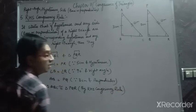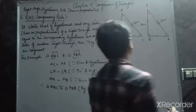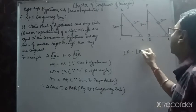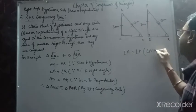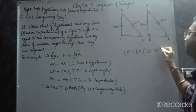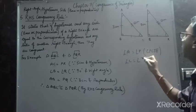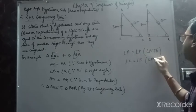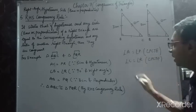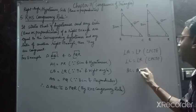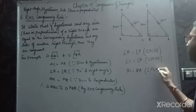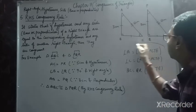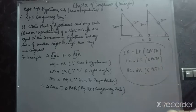Angle A must equal angle P by CPCT. Angle C must equal angle R by CPCT. And BC will equal QR by CPCT, because both triangles are congruent and the rest of the corresponding parts must be equal.